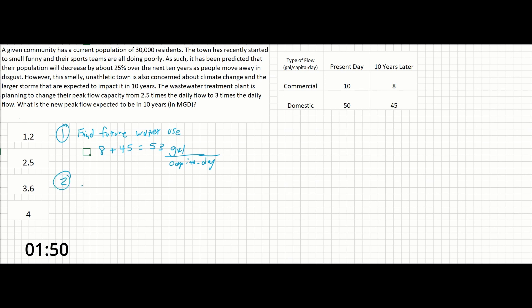Step 2. We're going to find the new expected population in 10 years. So if our current population is 30,000 and it's expected to decrease by 25%, all we have to do is 30,000 times 75% of the whole since that'll be what's left and that'll give us 22,500 residents.